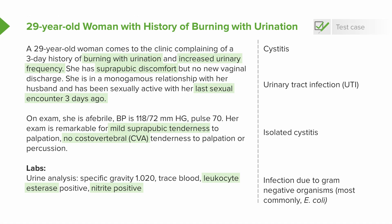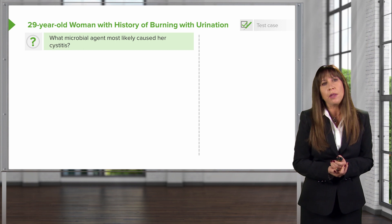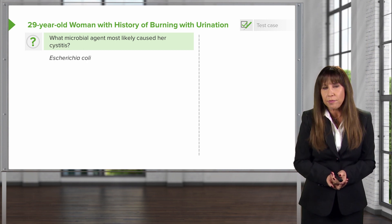Let's get back to our original clinical case — our 29-year-old woman with cystitis. Her symptoms of dysuria, frequency, and urgency were very suggestive of cystitis. She had the right behavioral determinants, having recently had intercourse with her husband. On physical exam, she had suprapubic tenderness without CVA tenderness or fever, meaning she likely did not have pyelonephritis. Her urine showed leukocyte esterase and nitrites positive, indicative of gram-negative organisms. The most likely microbial cause of her cystitis is E. coli.